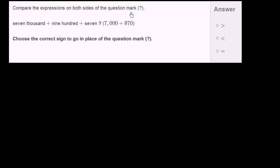Compare the expressions on both sides of the question mark. So on the left-hand side of the question mark, I have 7,907. So it's 7,000 plus 900 plus 7, which is going to be the same thing as 7,907.